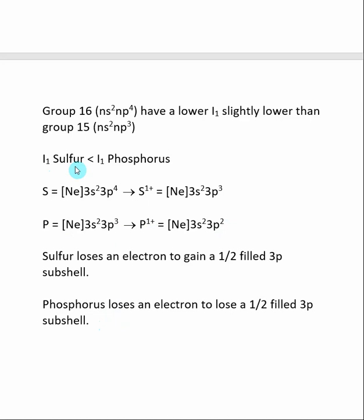Thus, it's easier to remove an electron from sulfur than phosphorus, and therefore, the ionization energy for sulfur is lower than the ionization energy for phosphorus.